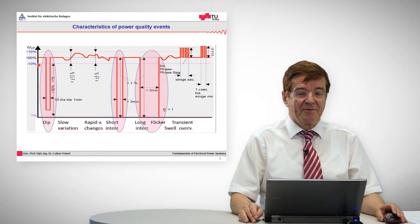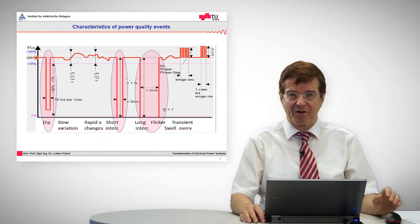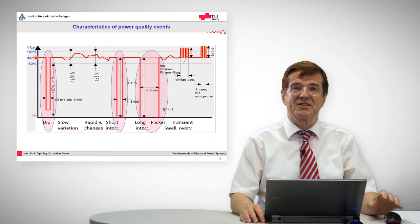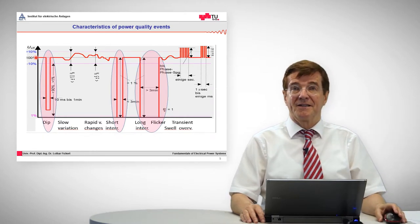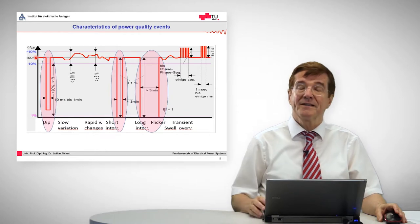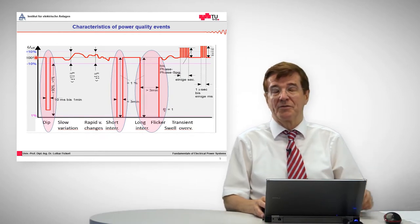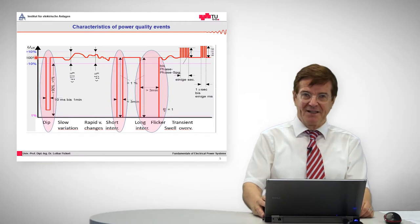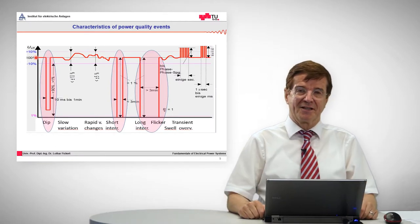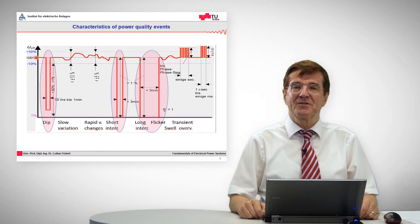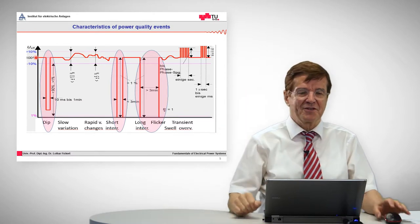When we take the voltage, which should be stable all the time, it has certain deviations from its perfect form. These deviations are described by power quality parameters. One of the parameters is frequency, which in our countries is more or less stable all the time. But when it comes to the amplitude of the voltage, which should also be stable, we have some fluctuations.